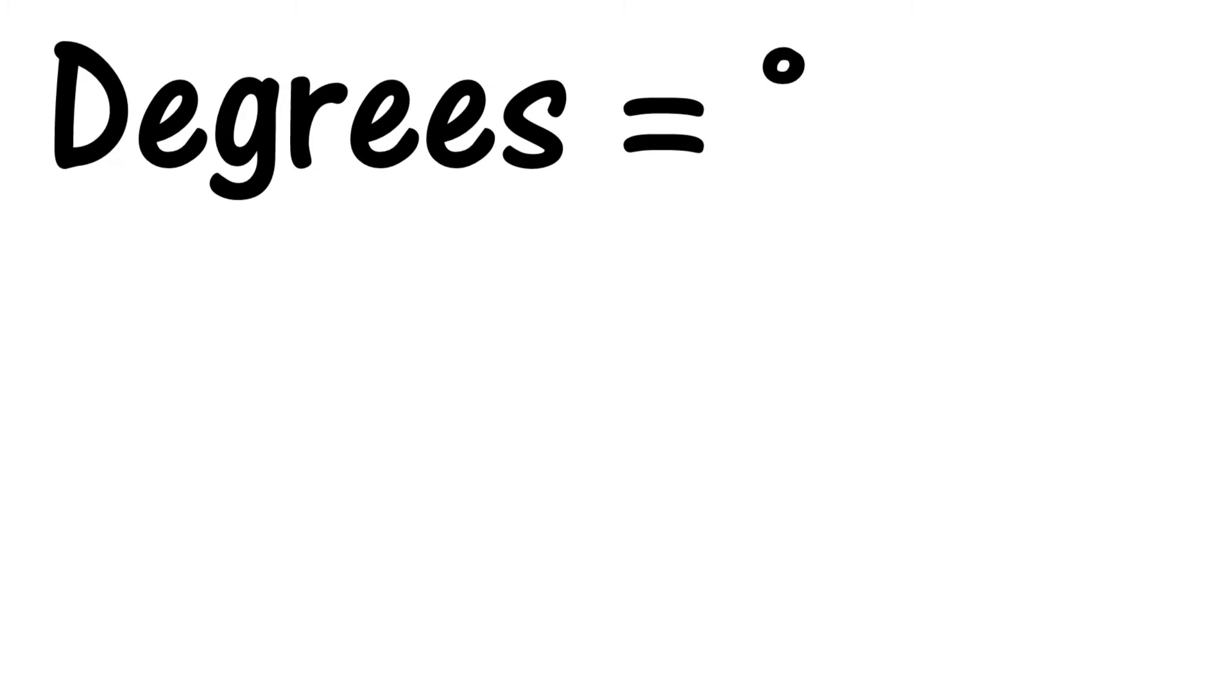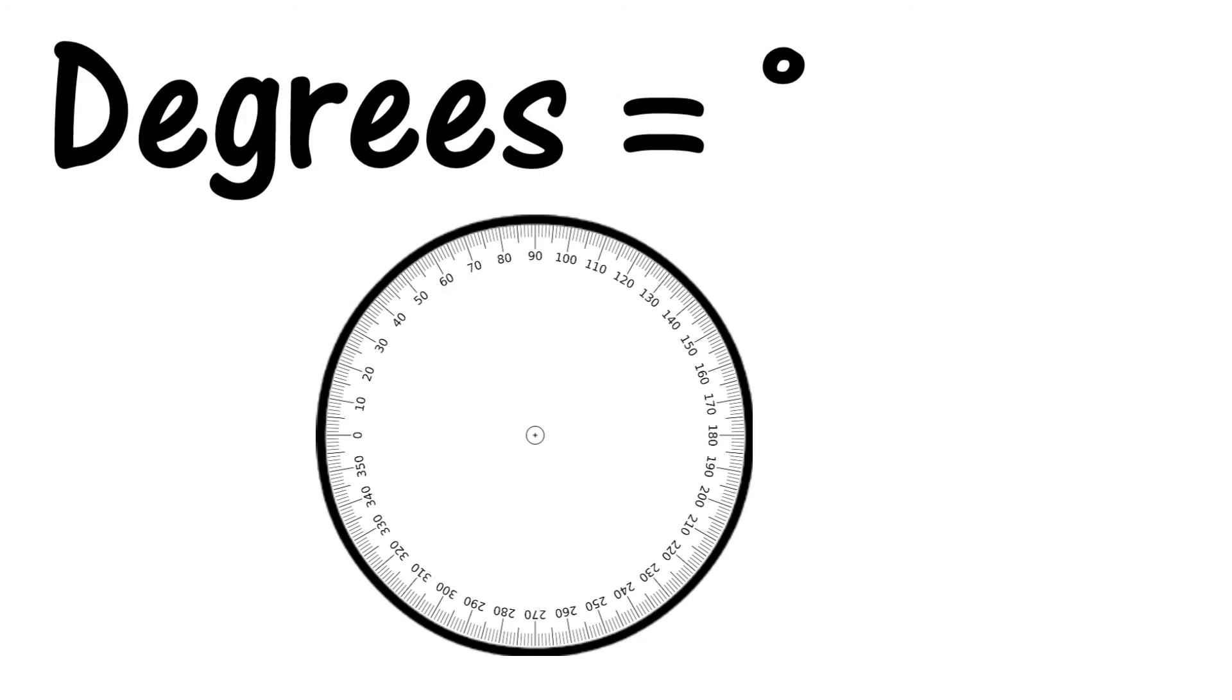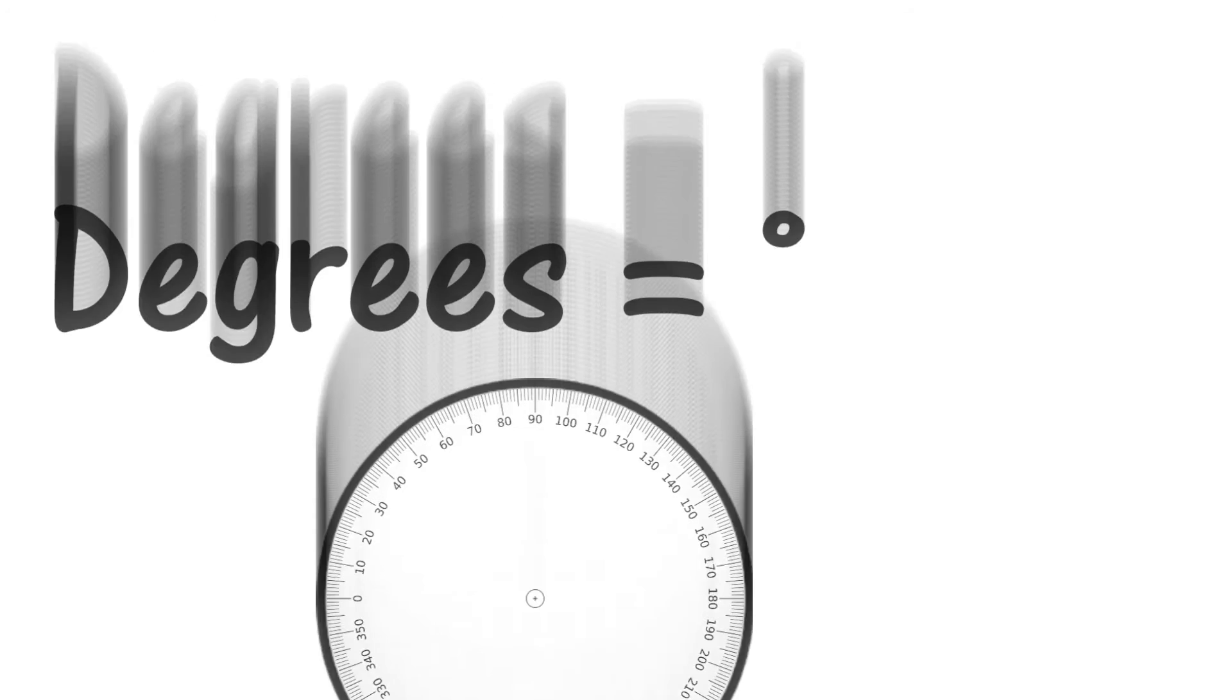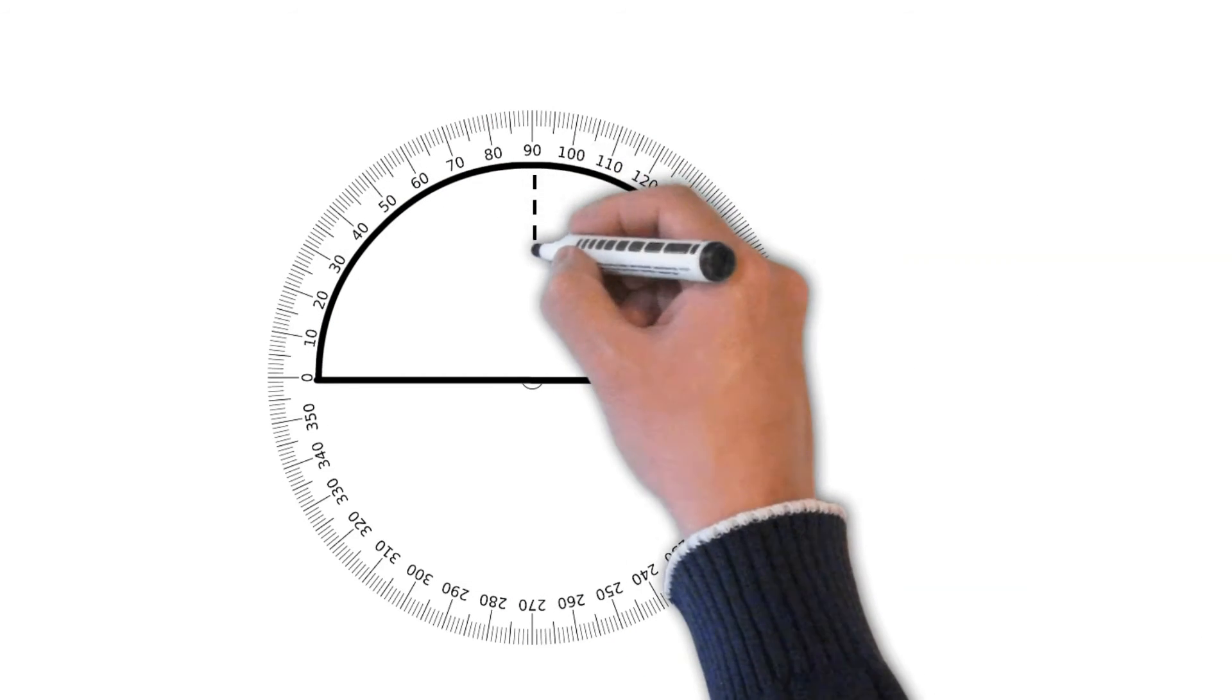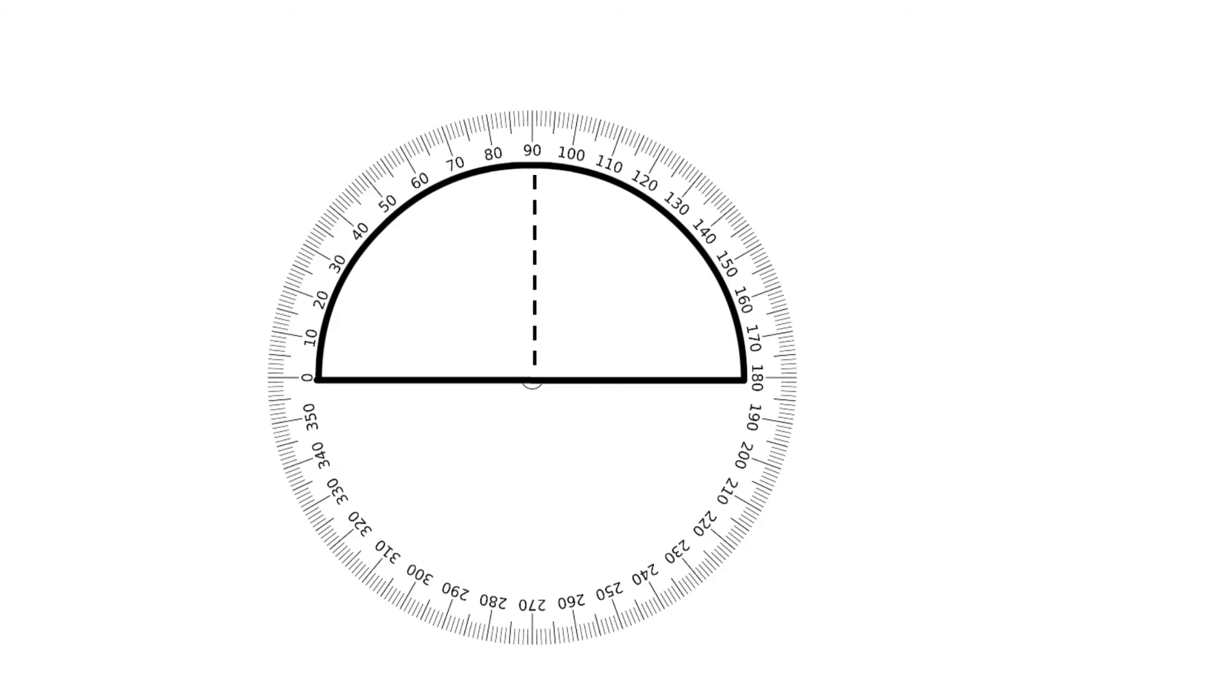Degrees are used to measure angles. A full circle has 360 degrees, a half circle has 180 degrees, and a quarter circle has 90 degrees.